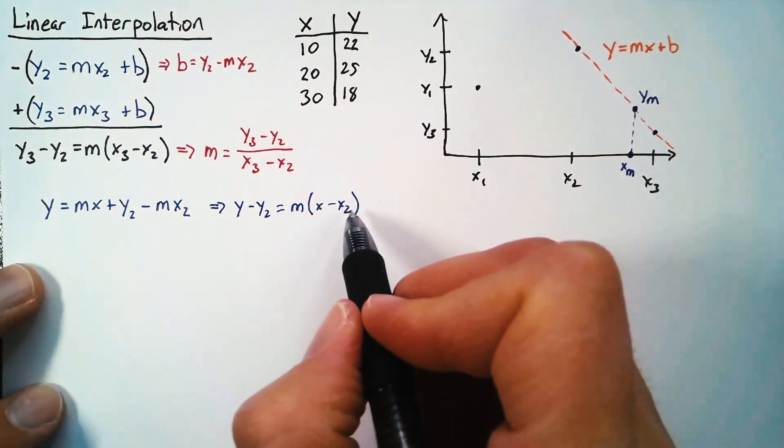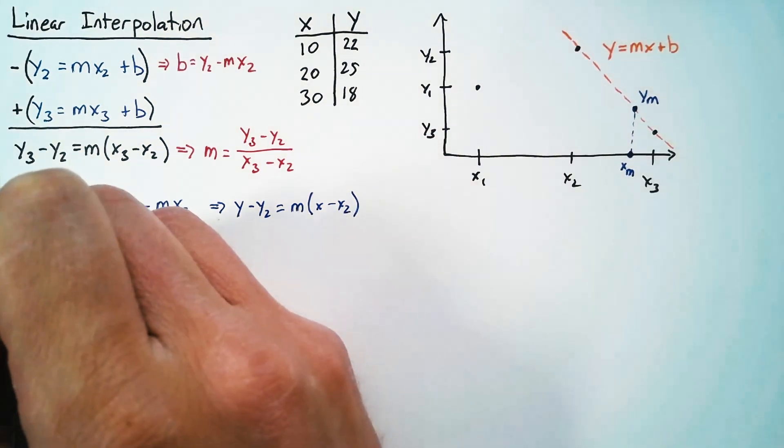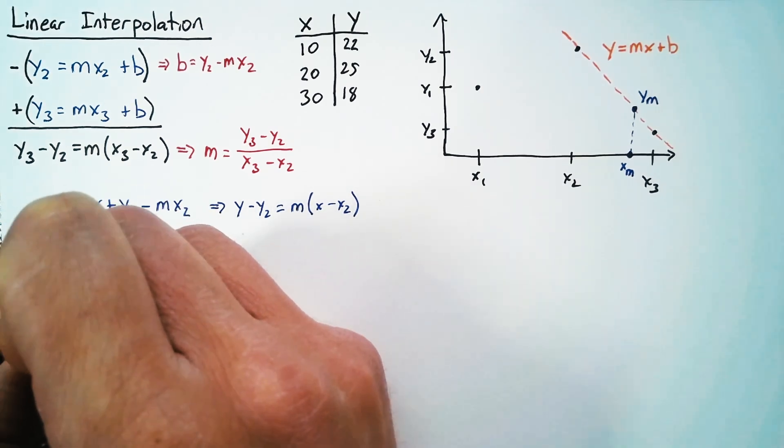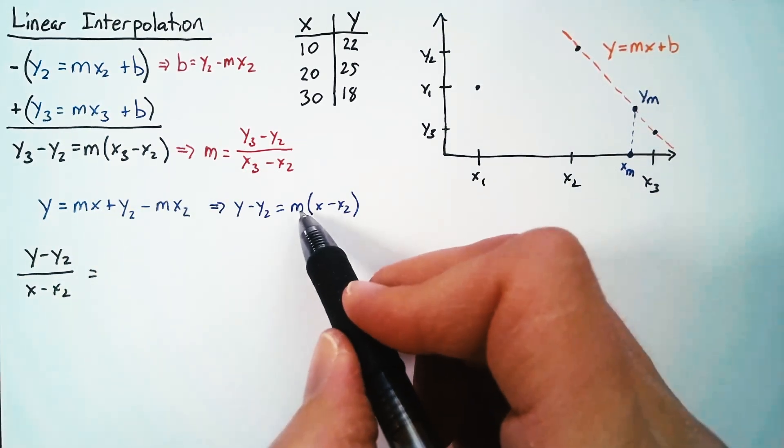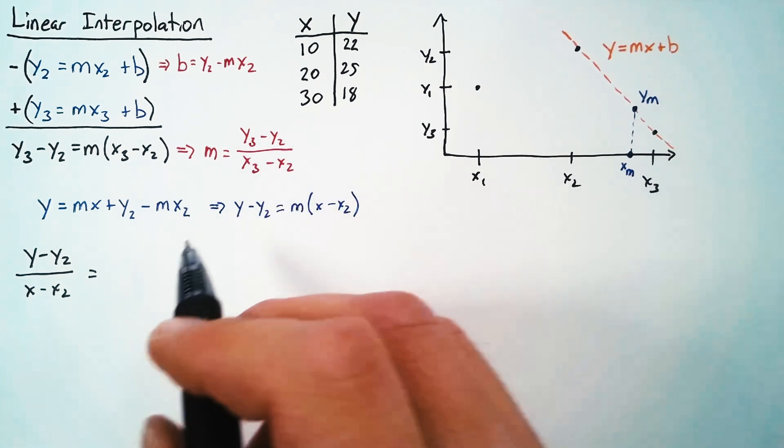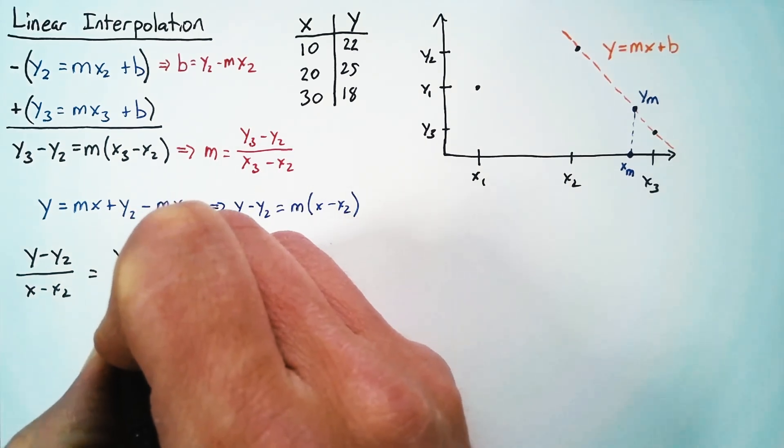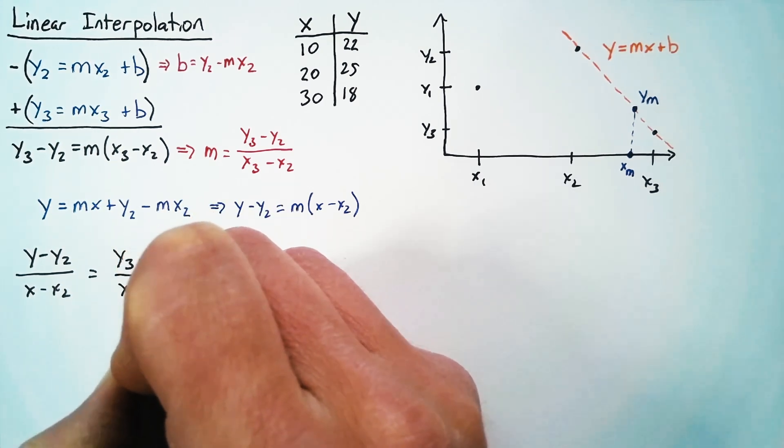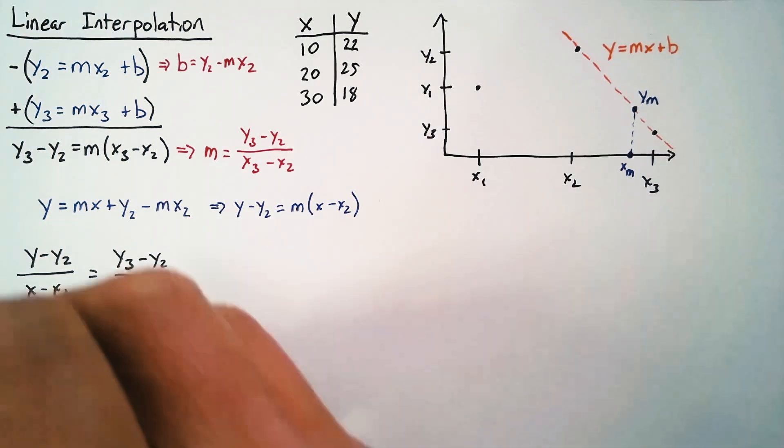Okay, so again, we're going to divide over this x minus x2. So we have y minus y2 over x minus x2, and that's equal to m. But then we know that m is equal to this chunk here. And so this is going to be equal to y3 minus y2 over x3 minus x2.